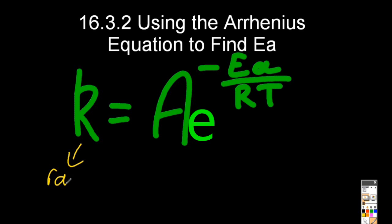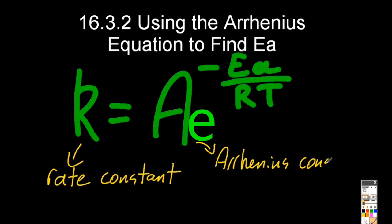K is the rate constant. A is the Arrhenius constant, which is related to collision geometry and frequency, to be honest with you.